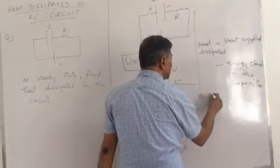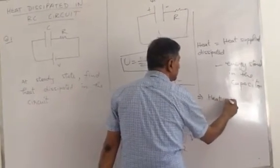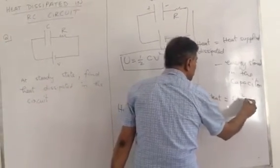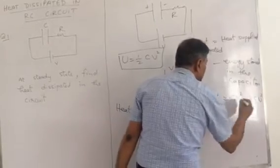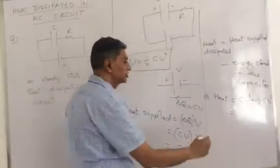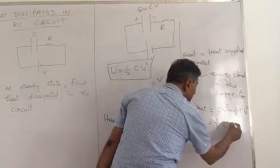So I will write heat dissipated as CV square minus half CV square. It means heat dissipated in the circuit is half CV square.